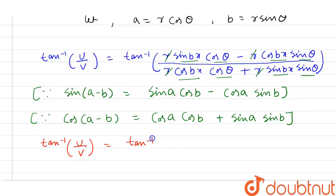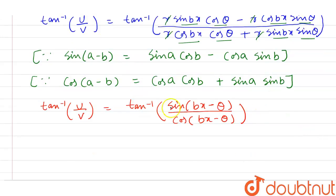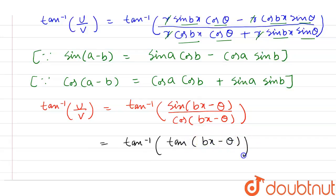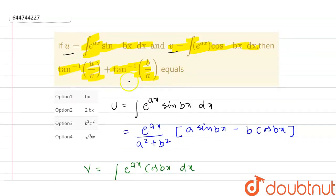We get tan inverse of u upon v equals tan inverse of sin(bx − θ) upon cos(bx − θ). Since sin(θ) upon cos(θ) equals tan(θ), this simplifies to tan inverse of tan(bx − θ), which equals bx minus θ.